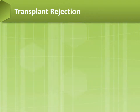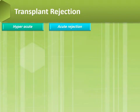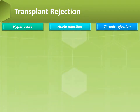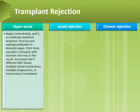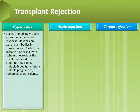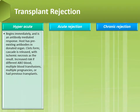There are three types of transplant rejection: hyperacute, acute, and chronic. During hyperacute rejection, it begins immediately and is an antibody-mediated response — the host has pre-existing antibodies against the donated organ. Clots form, cascades are released, and ischemic necrosis results. There is increased risk if mismatched ABO blood is transfused, or if the patient has had multiple blood transfusions, multiple pregnancies, or previous transplants.